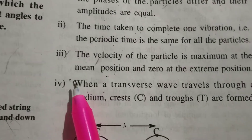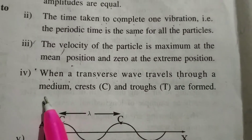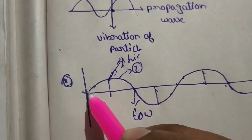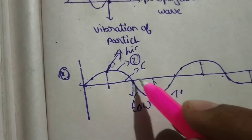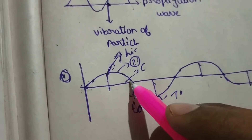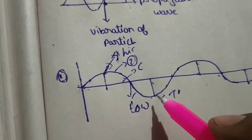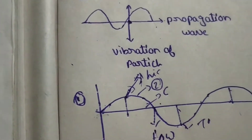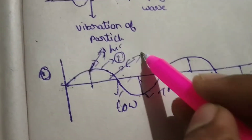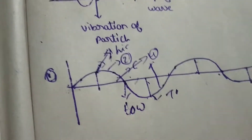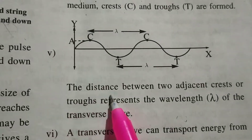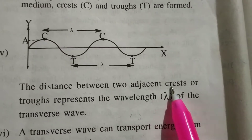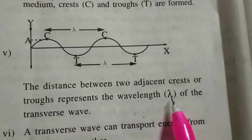The transverse wave travels through a medium and crests and troughs are formed. The distance between two successive crests or troughs represents the wavelength of the transverse wave.